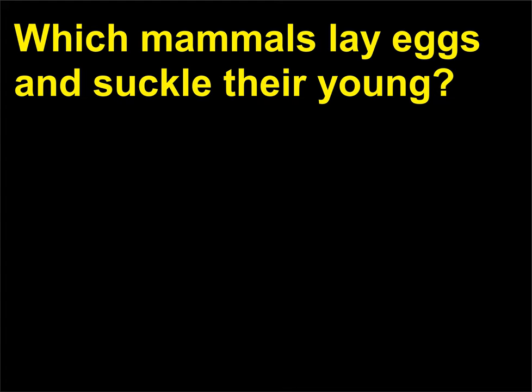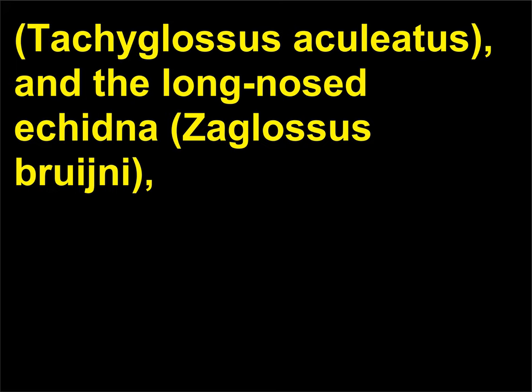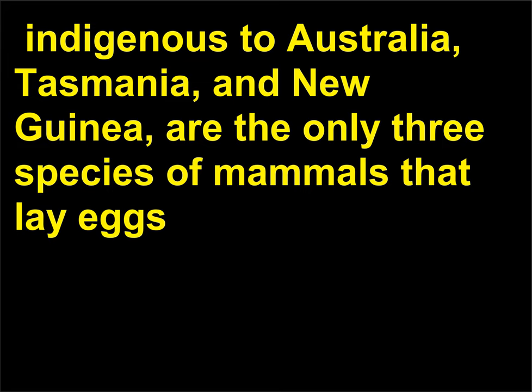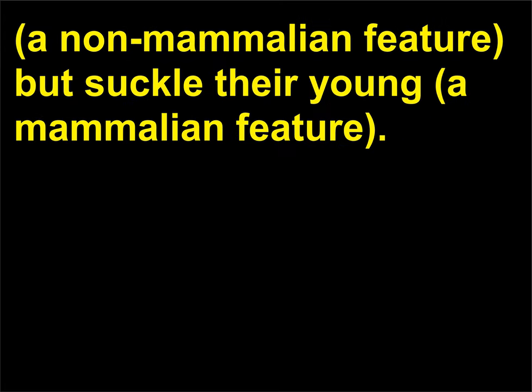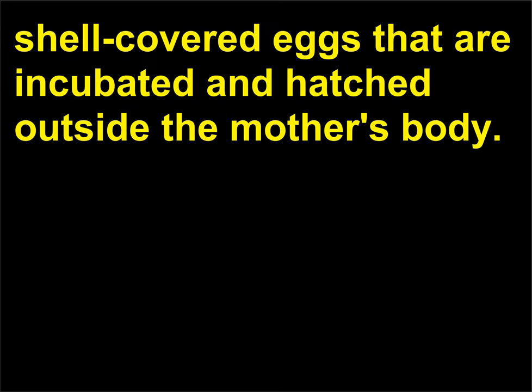Which mammals lay eggs and suckle their young? The duck-billed platypus (Ornithorhynchus anatinus), the short-nosed echidna or spiny anteater (Tachyglossus aculeatus), and the long-nosed echidna (Zaglossus bruijni) — indigenous to Australia, Tasmania, and New Guinea — are the only three species of mammals that lay eggs (a non-mammalian feature) but suckle their young (a mammalian feature). These mammals, order Monotremata, resemble reptiles in that they lay rubbery, shell-covered eggs that are incubated and hatched outside the mother's body.